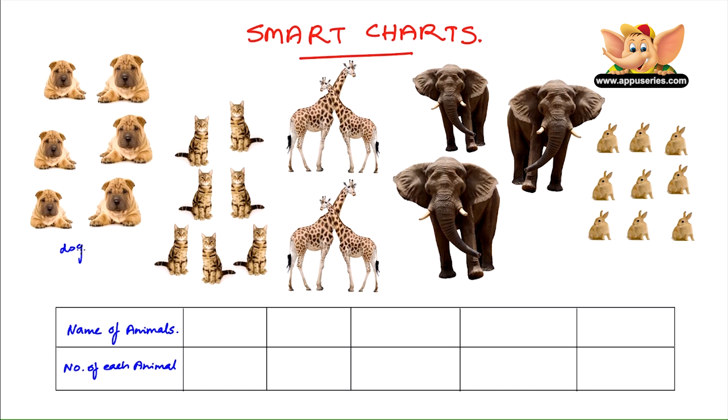Let's first identify the different animals and write them down. Now we have dogs, cats, giraffes, elephants and rabbits.